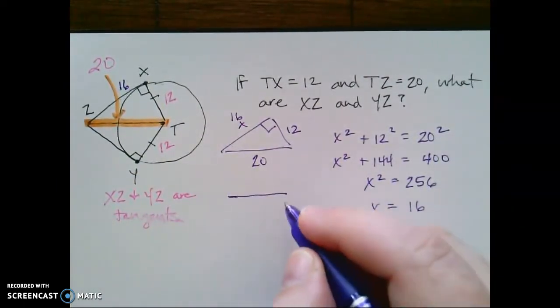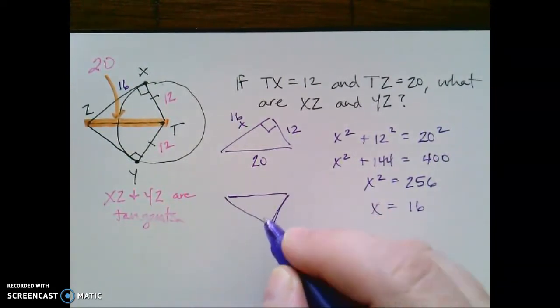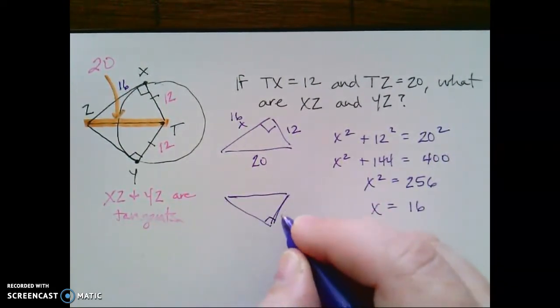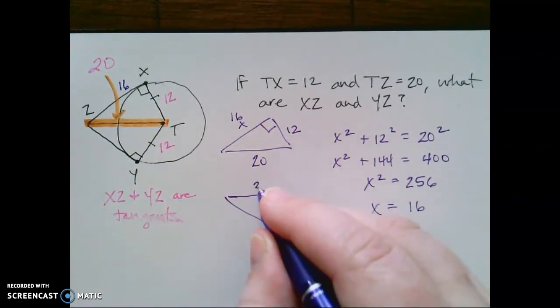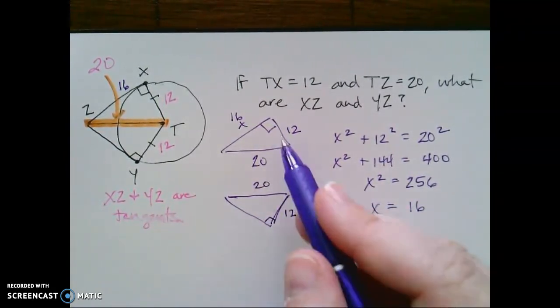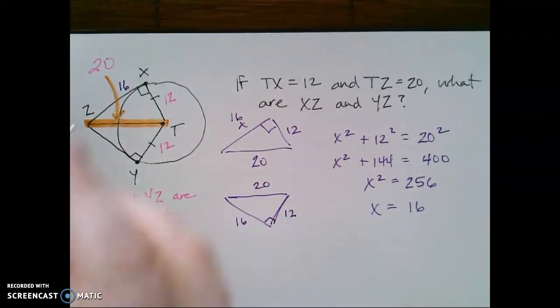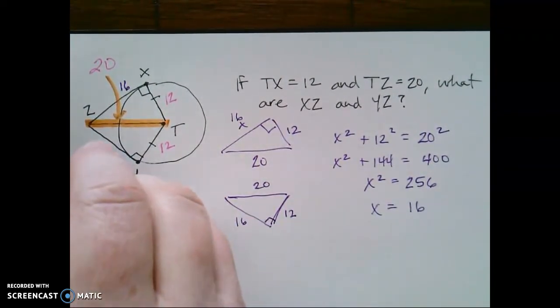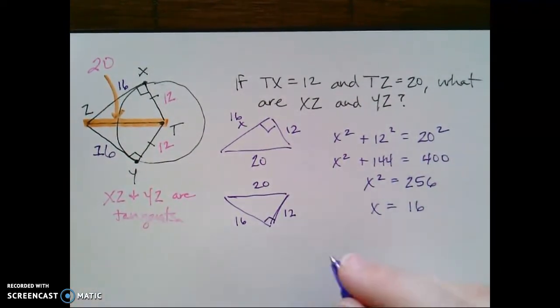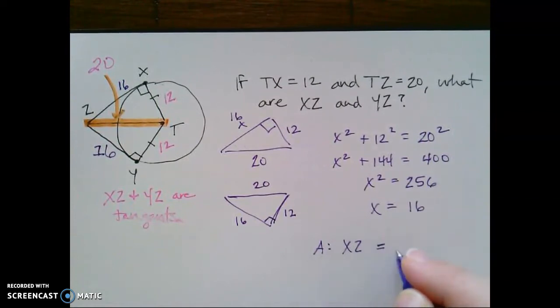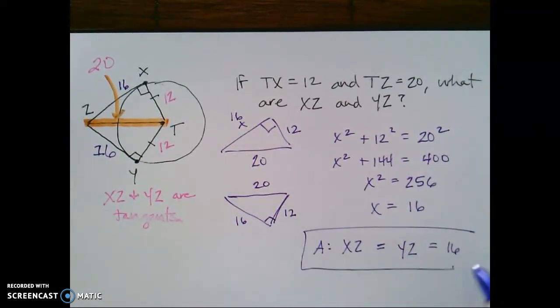And then if I look at my second triangle, and some of you are going, oh, why is she doing this? I already know. Well, this is the point. If this is 12, and this is 20, then it's just the same figure, which means Pythagorean theorem would hold again. And yz is also 16. So we're going to answer our question, xz equals the same length as yz, which is 16 units.